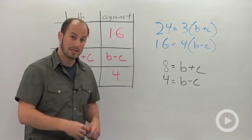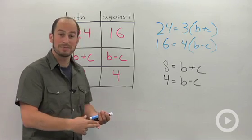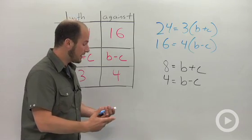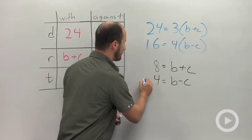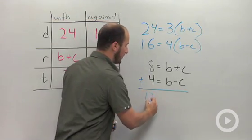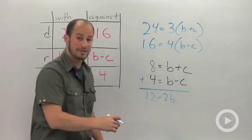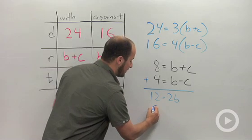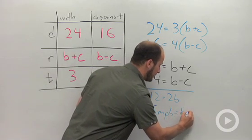Now we just have a system. We can solve this out as we would any other system. We could either do elimination or substitution. What I see is if I add these equations together, my C's are going to disappear. So adding, we end up with 12 equals 2B. Our C's canceled. So dividing by 2, we get 6 miles per hour equals the boat speed.